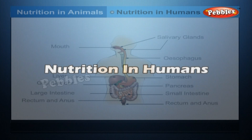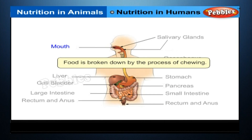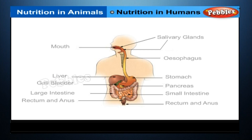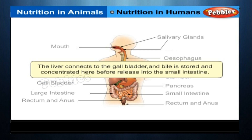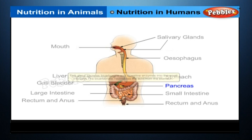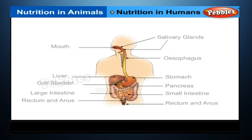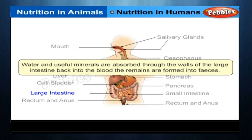Nutrition in Humans. Mouth: Food is broken down by the process of chewing. Liver: The liver secretes bile which plays a vital role in digestion in the small intestine. Gallbladder: The liver connects to the gallbladder and bile is stored and concentrated here before release into the small intestine. Pancreas: This gland secretes bicarbonate and digestive enzymes into the small intestine; the bicarbonate neutralizes the acid from the stomach. Large Intestine: Water and useful minerals are absorbed through its walls back into the blood, and the remains are formed into feces.